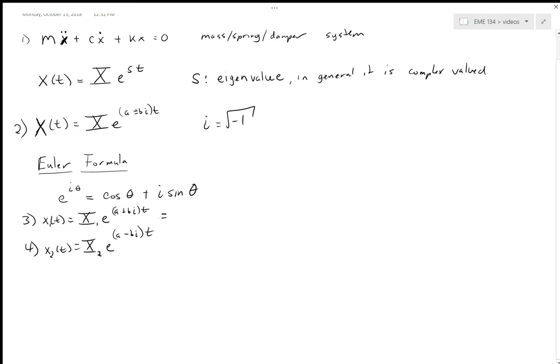And they can be rewritten using Euler's formula. It's going to give us X1 times e^(at) times [cos(bt) + i*sin(bt)], and then equation four will look like X2*e^(at) times [cos(bt) + i*sin(-bt)].